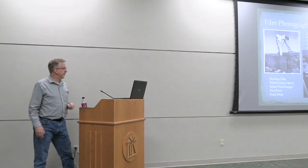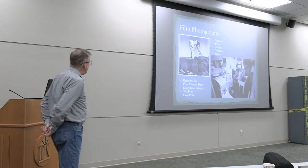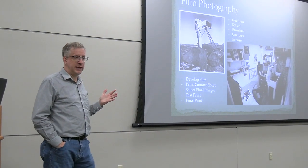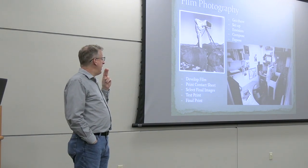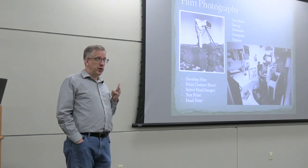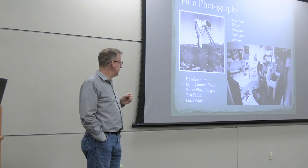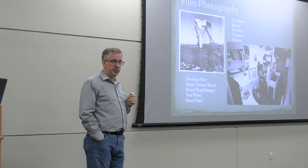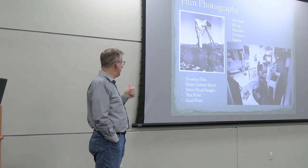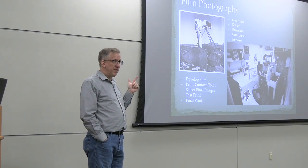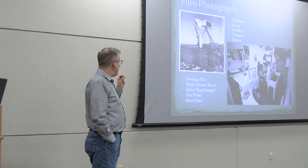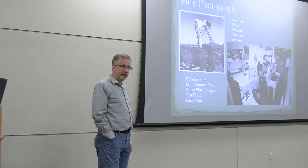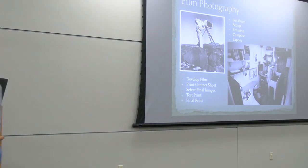Some famous photographers — Ansel Adams in the upper left there, standing with a big massive view camera, an eight-by-ten piece of film behind the bellows. They all went through the same process: get to a place, set up, envision what they wanted to achieve, compose and expose. Then there was a whole additional process on the backside. Clicking the shutter was just the first part. Once they clicked the shutter, they'd develop the film, print a contact sheet, select images to print, do a test print, make modifications, and then do final printing.